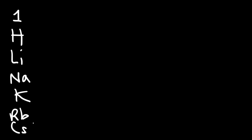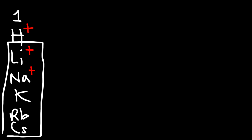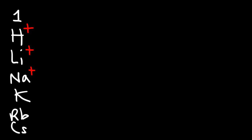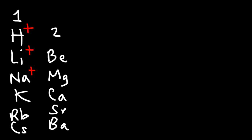Cs is cesium. Elements in group one, when they form ions, tend to form ions with a positive one charge. The metals in this group — lithium, sodium, potassium, rubidium, and cesium — are known as the alkali metals. In group two you have beryllium (Be), magnesium (Mg), calcium (Ca), strontium (Sr), and barium (Ba). These are called the alkaline earth metals and as ions they form a positive two charge.